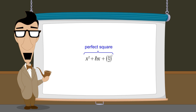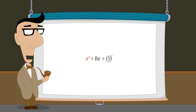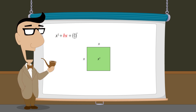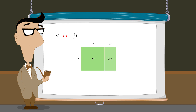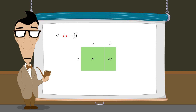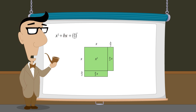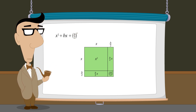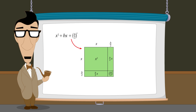In this geometric proof, we represented the x-squared term by the area of a square with sides of length x, the bx term by the area of a rectangle with sides of lengths b and x, or alternatively two smaller rectangles each with half that area, and the constant term b over two-quantity-squared by the area of a square with sides of length b over two. The square created from the sum of these areas represented the entire quadratic expression, and since that square had sides of length x plus b over two, this expression can also be written as x plus b over two-quantity-squared.